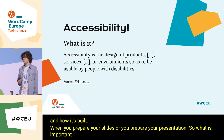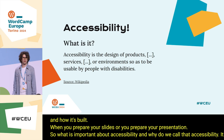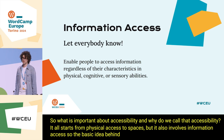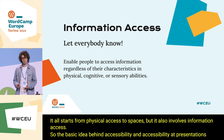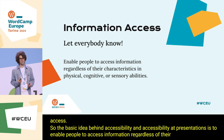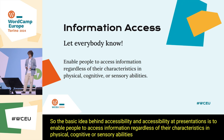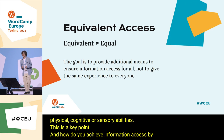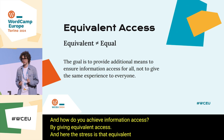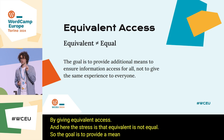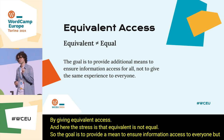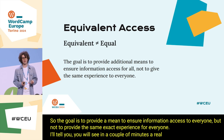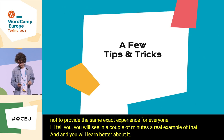What is important about accessibility is that it all starts from physical access to spaces, but it also involves information access. The basic idea behind accessibility at presentations is to enable people to access information regardless of their physical, cognitive, or sensory abilities. How do you achieve information access? By giving equivalent access — and here the stress is that equivalent is not equal. The goal is to provide a means to ensure information access to everyone, but not to provide the same exact experience for everyone.